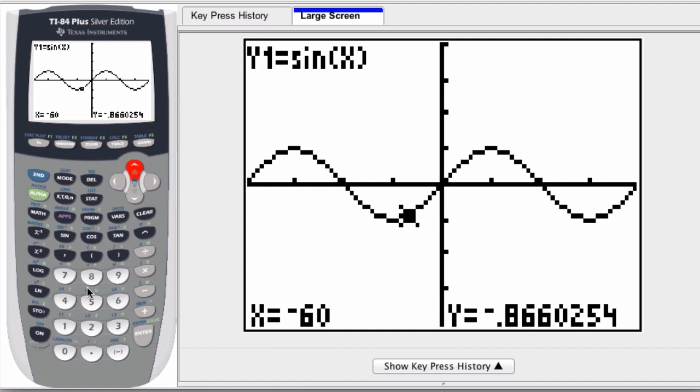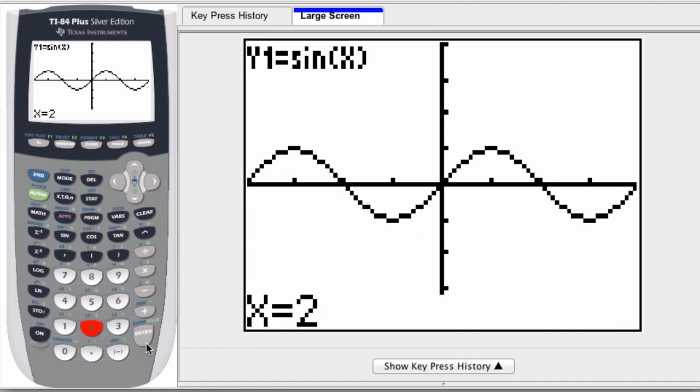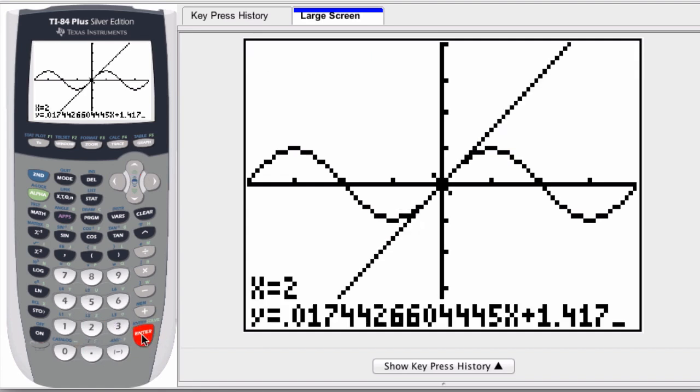If I want the tangent line when x is 2, I enter in 2, hit enter, and then it draws the tangent line to that point, and notice it even gives the equation for it down here.